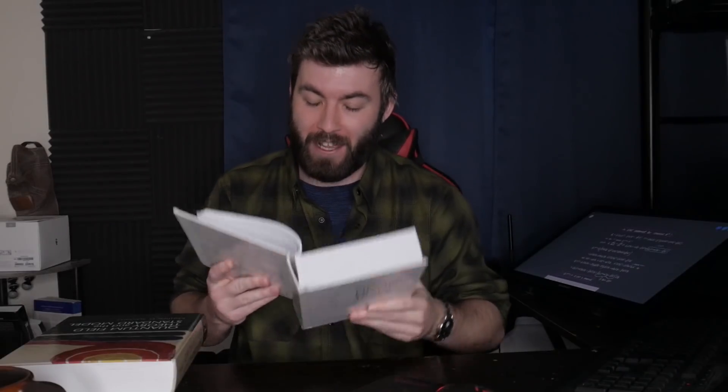I didn't learn quantum field theory from this textbook, though I know a lot of people do. I primarily use it as a reference book for all of those integrals and relations I don't have in memory. I've used it so many times that when integrals pop up, I know exactly where they are in Peskin and Schroeder — it's page 807. These integrals look pretty obscure and complicated, but they show up all the time, and I'm not going to solve them from scratch every single time.